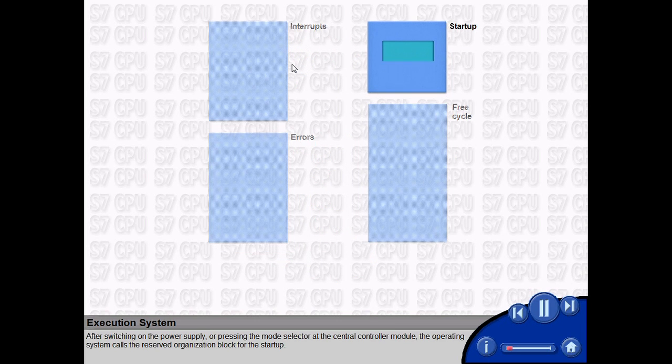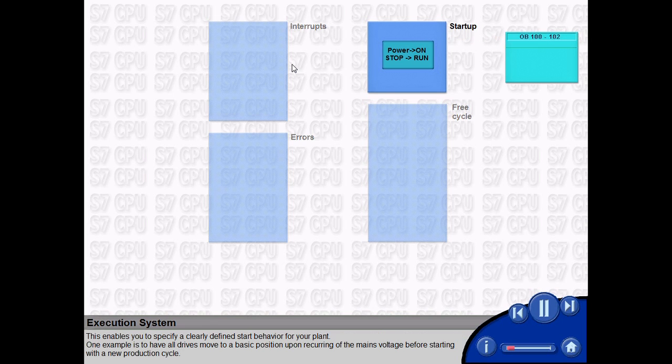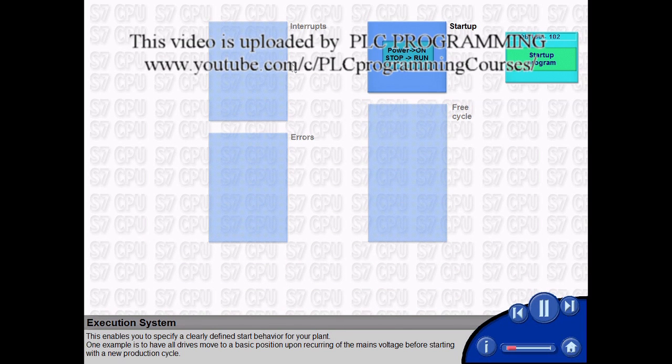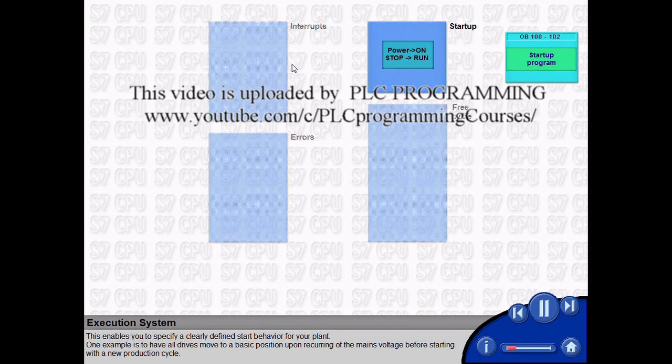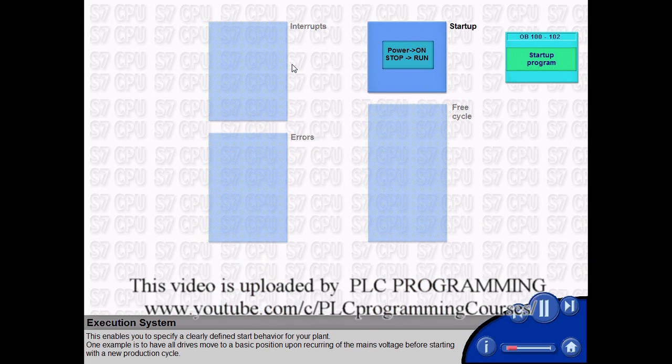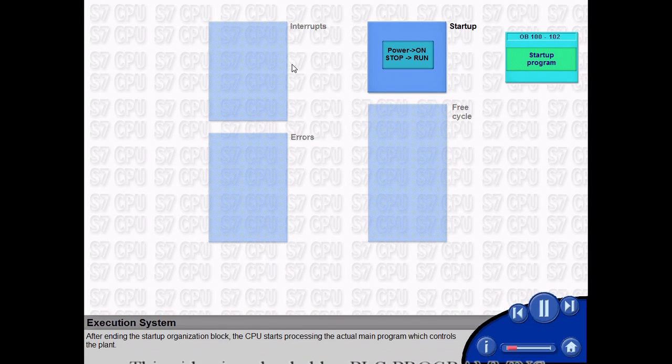After switching on the power supply or pressing the mode selector at the central controller module, the operating system calls the reserved organization block for the startup. This enables you to specify a clearly defined start behavior for your plant. One example is to have all drives move to a basic position upon recurring of the mains voltage before starting with a new production cycle.